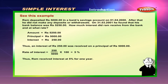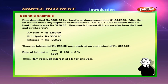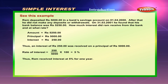See this example: Ram deposited rupees 5,000 in a bank's savings account on 1st April 2000. After that, he did not make any deposits or withdrawals. On 31st March 2001, he found that his bank balance was rupees 5,250. How much interest did Ram receive from the bank, and at what rate?